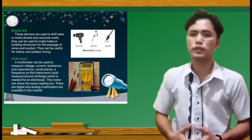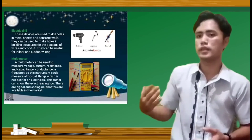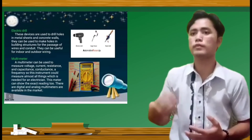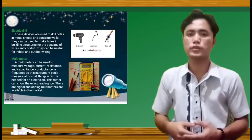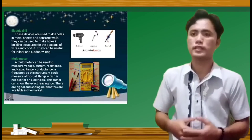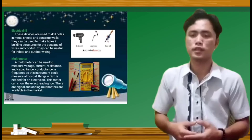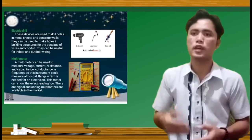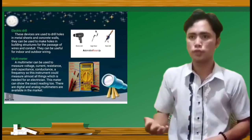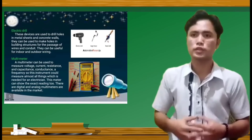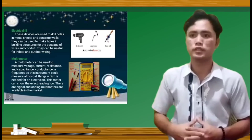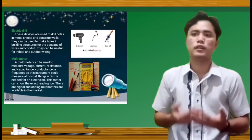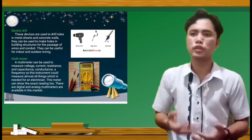So the last one, the basic electrical hand tools and equipment is multimeter. A multimeter can be used to measure voltage, current, resistance, and capacitance or conductance and frequency. So this instrument could measure almost all things which are needed for an electrician. This meter can show the exact reading. There are digital and analog multimeters available in the market.